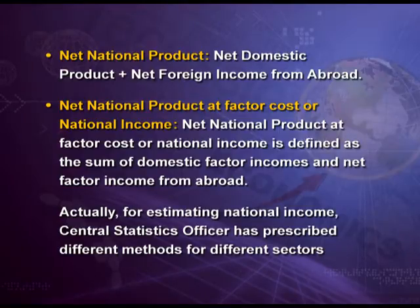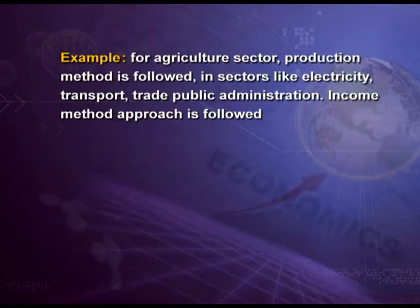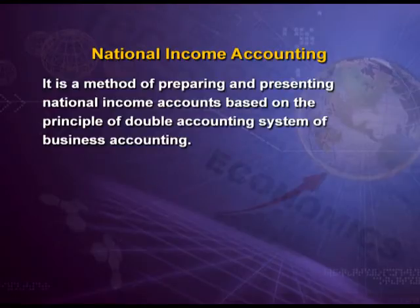For estimating national income, the Central Statistics Officer has prescribed different methods for different sectors. For example, for the agriculture sector, the production method is followed. In sectors like electricity, transport, trade, and public administration, the income method approach is followed. National income accounting is a method of preparing and presenting national income based on the principle of the double accounting system of business accounting.